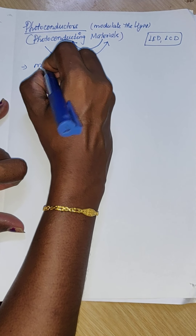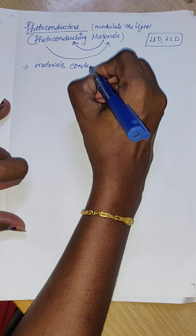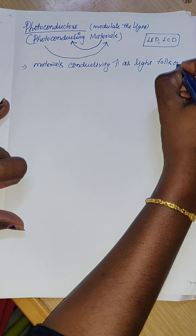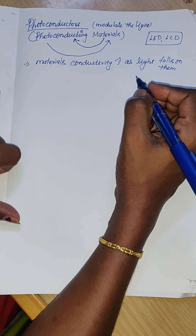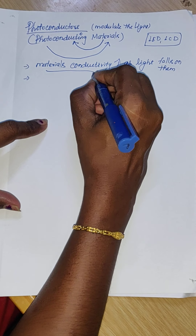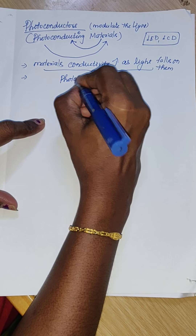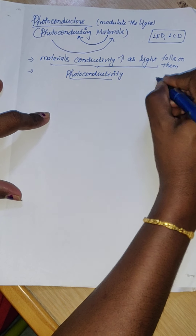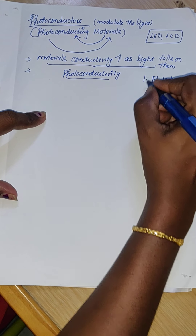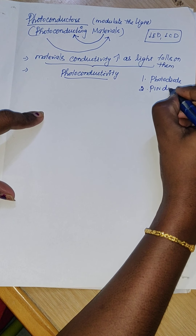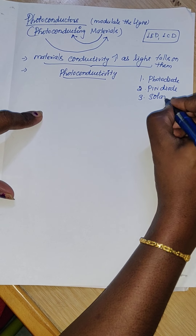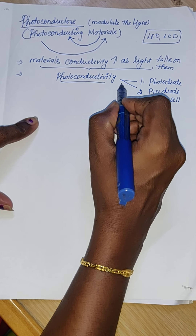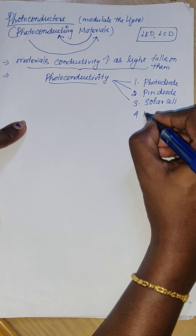Materials whose conductivity increases as light falls on them are called photo conducting materials or photo conductors, and the phenomena is called photo conductivity. This is a very important phenomena common to photo diode, PIN diode, solar cell, and PIN transistor — all topics covered in your syllabus.